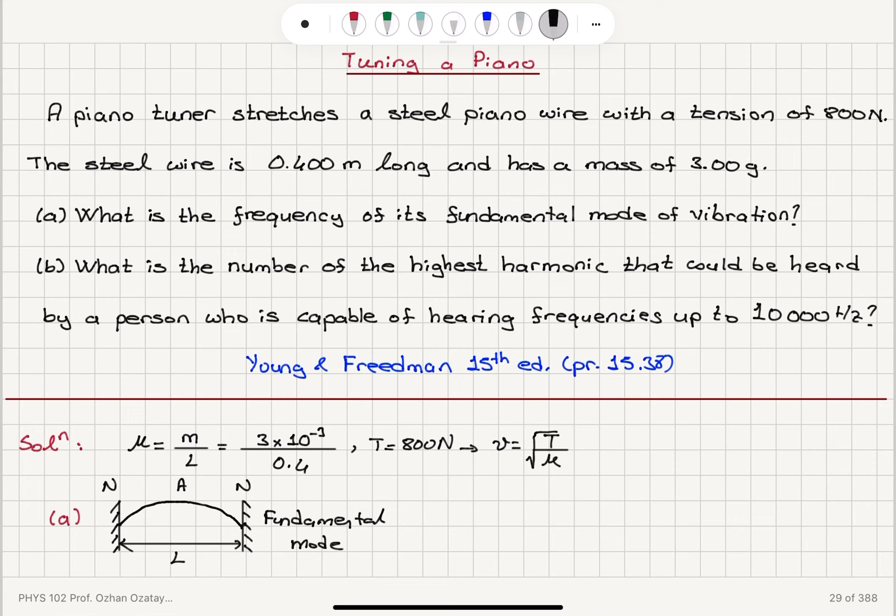Which is 800 times 0.4 divided by 3 times 10 to minus 3, square root. And this is equal to 326.6 meters per second.